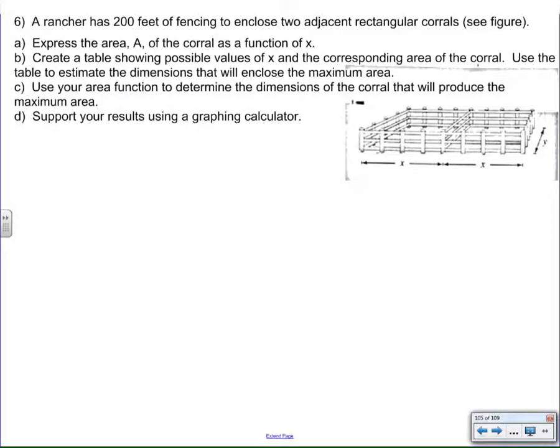Alright, another example of using quadratic functions to solve problems. This particular problem, we're looking at a rancher who's going to build a couple corrals, going to be adjacent to each other, and dude's going to be using 200 feet of fencing to create two corrals that would look something like this.